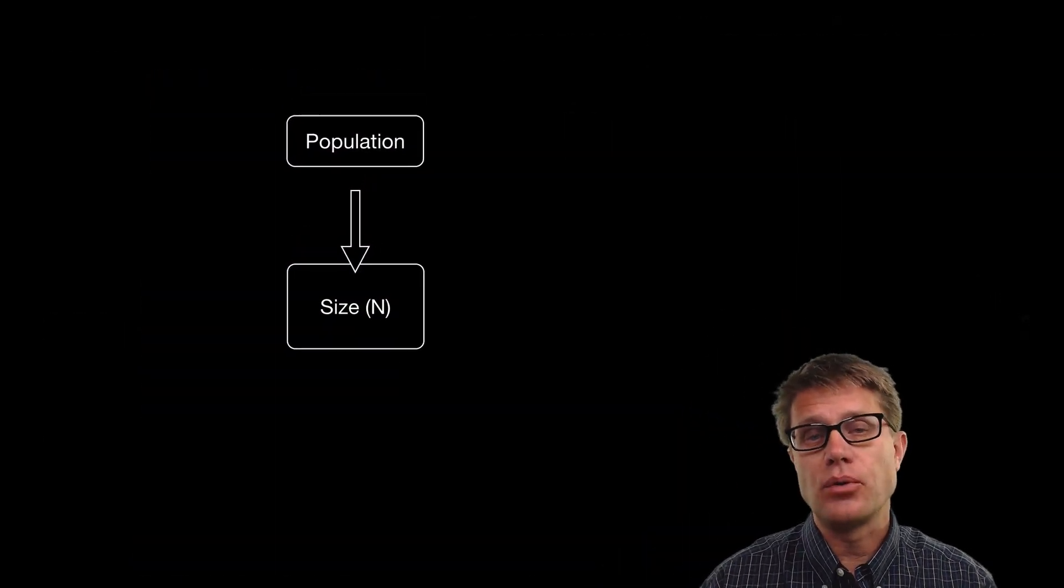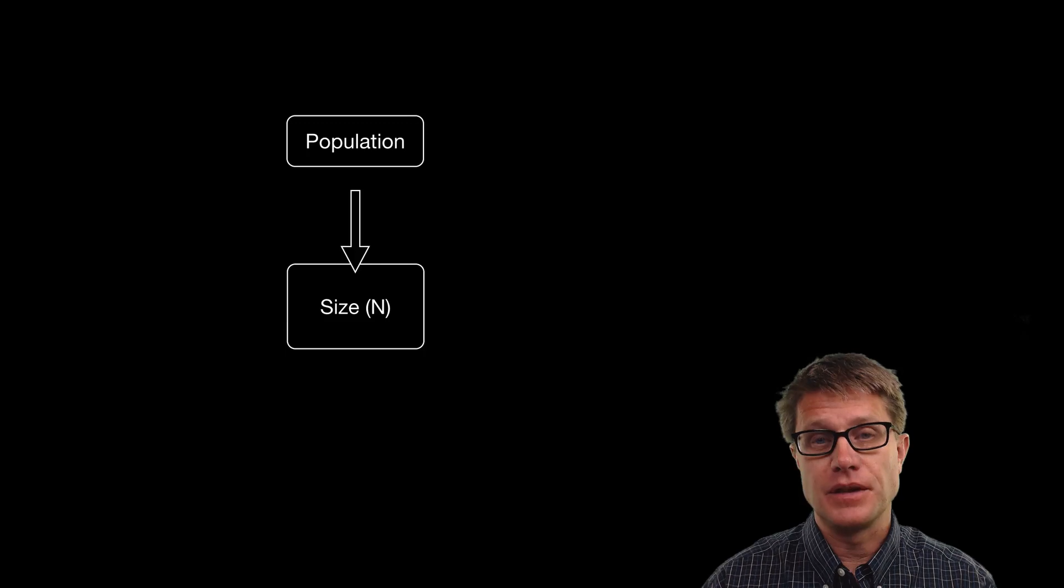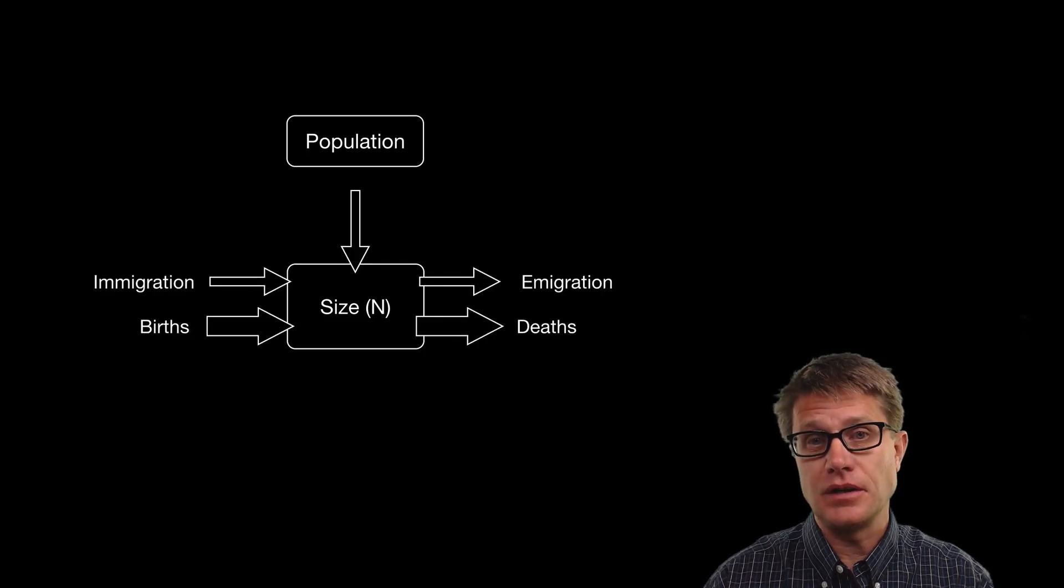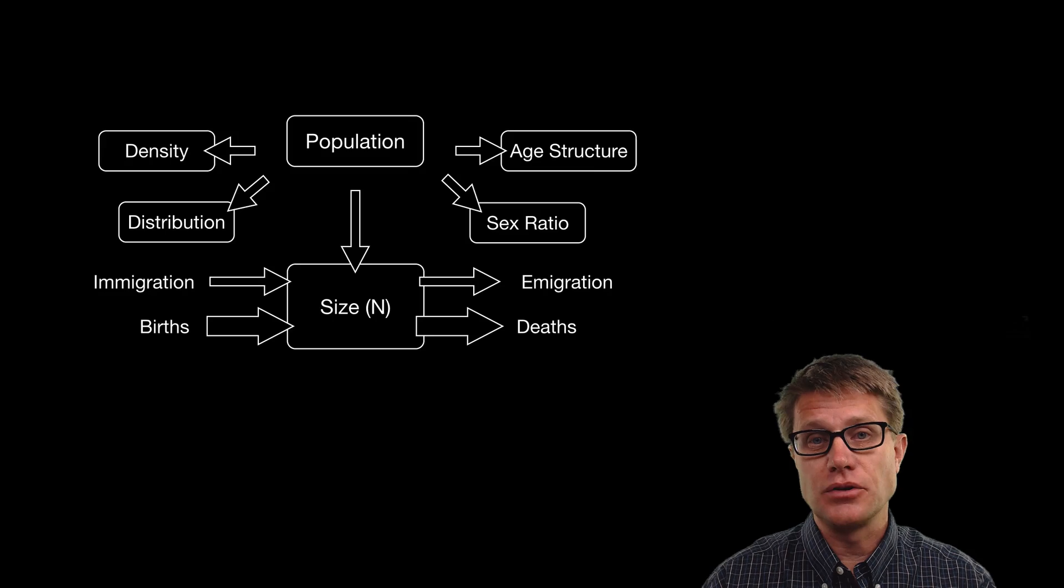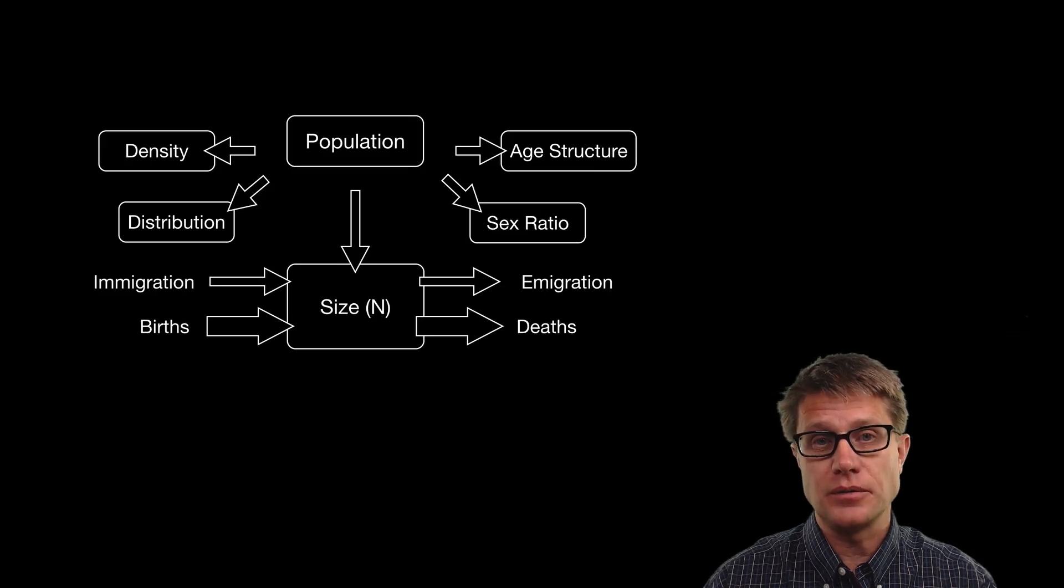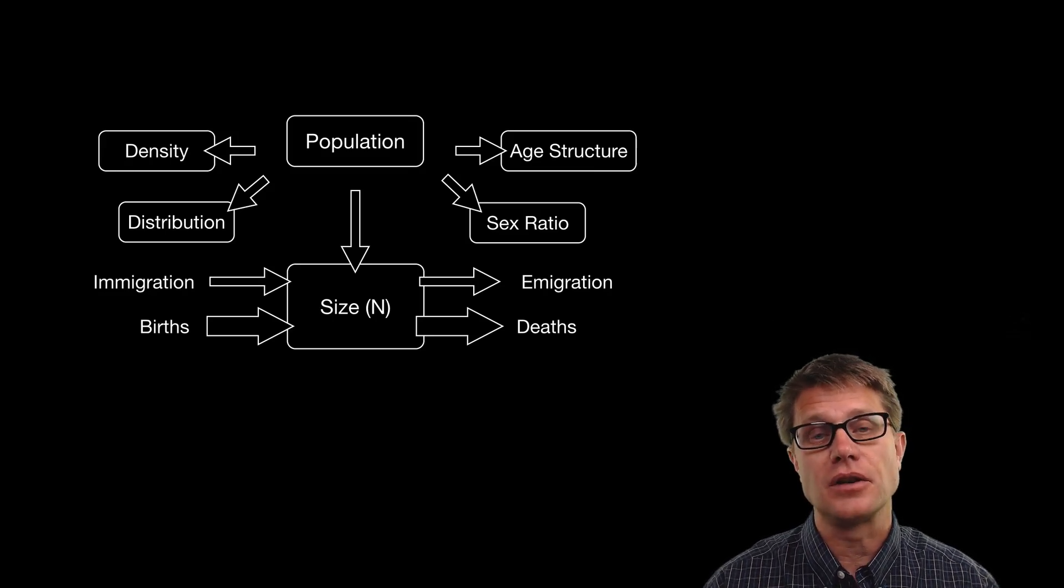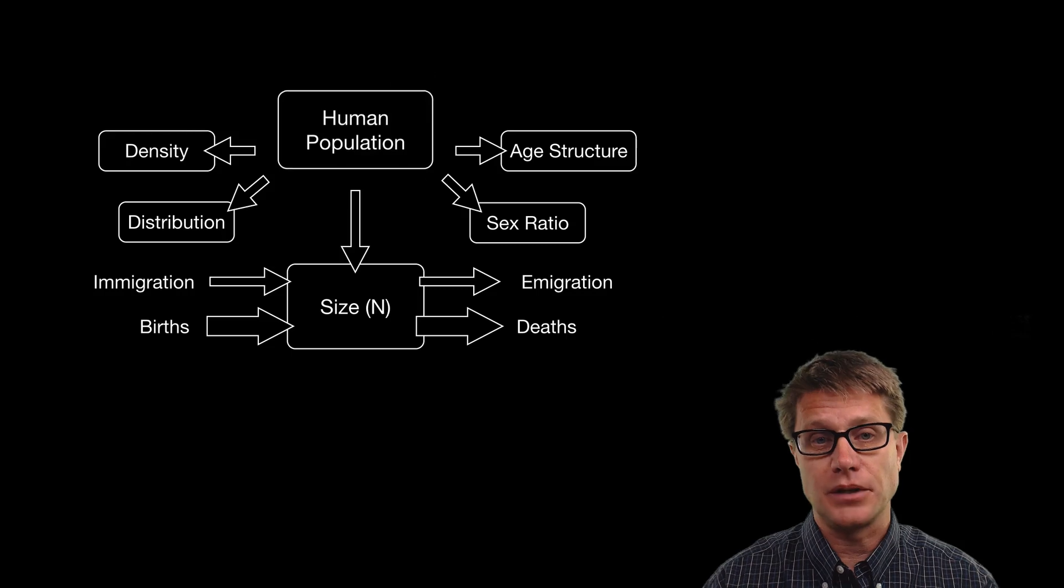So in the last video we talked about the important characteristics of a population. The size, which can be increased and decreased. We then talked about other characteristics, density, distribution, age structure, sex ratio. So in this video we are going to talk about how this all applies to the human population.